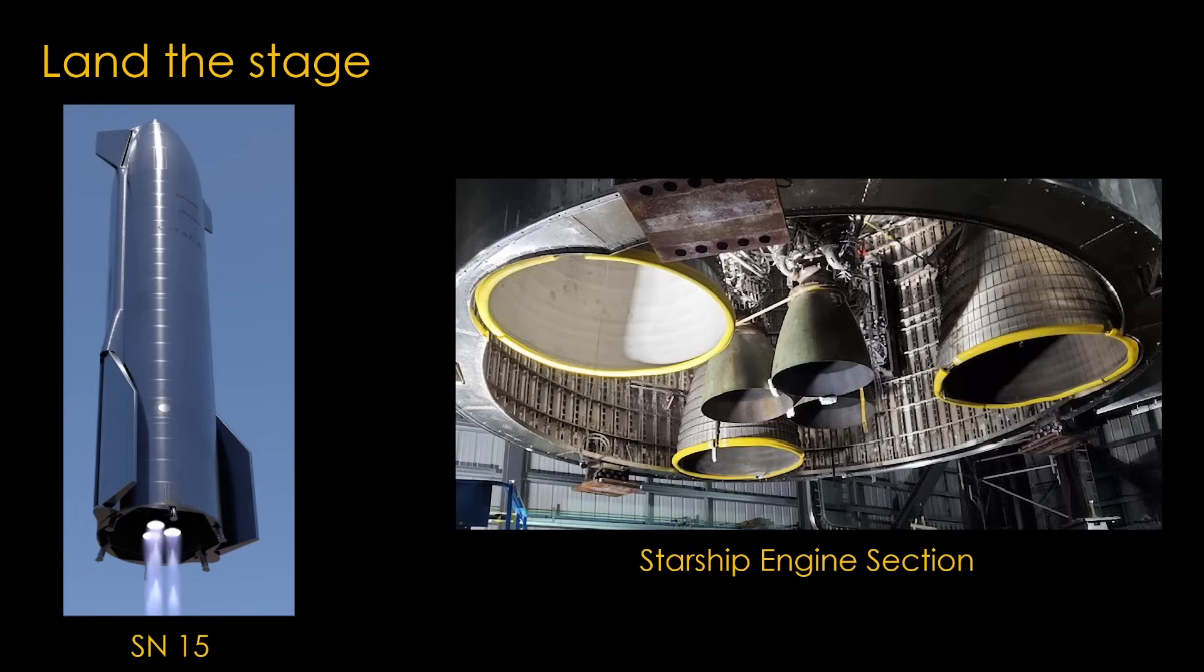That is why Starship has both highly efficient vacuum engines and less efficient sea level engines. The sea level engines are required to perform the landing operations. Right now, the mix is 3 sea level, 3 vacuum, but it's likely that Starship will switch to 3 sea level, 6 vacuum in future versions.